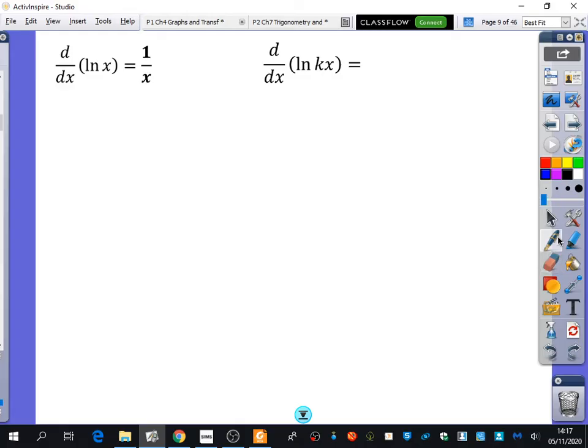Now, ln functions differentiate to 1 over x. So ln x differentiates to 1 over x. And again, all of this is going to be proven to you later. But for now, I want to give you as many facts and knowledge to try and do as much differentiation as we can. What do we think that ln of kx is going to differentiate to? You think it's going to be 1 over x.